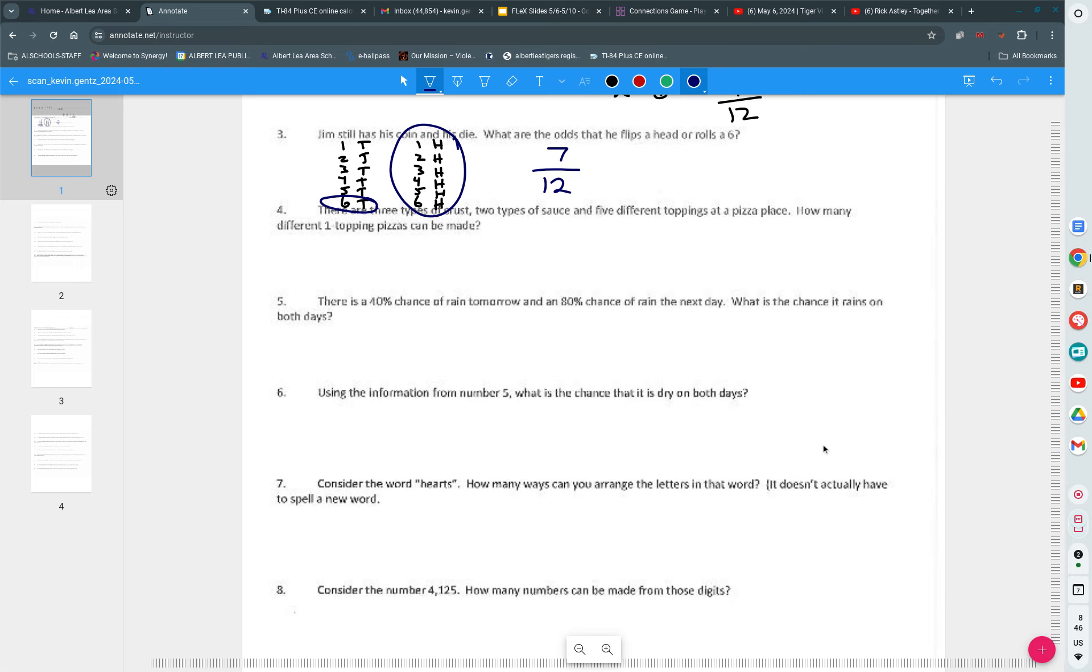There are three types of crust, two types of sauce, and five different toppings at a pizza place. How many different one-topping pizzas can be made? This is referencing the fundamental counting principle. If you have all these different options, you simply multiply them together. Three types of crust times two types of sauce times five different toppings. And I get out of that, there are 30 different pizzas that can be made.